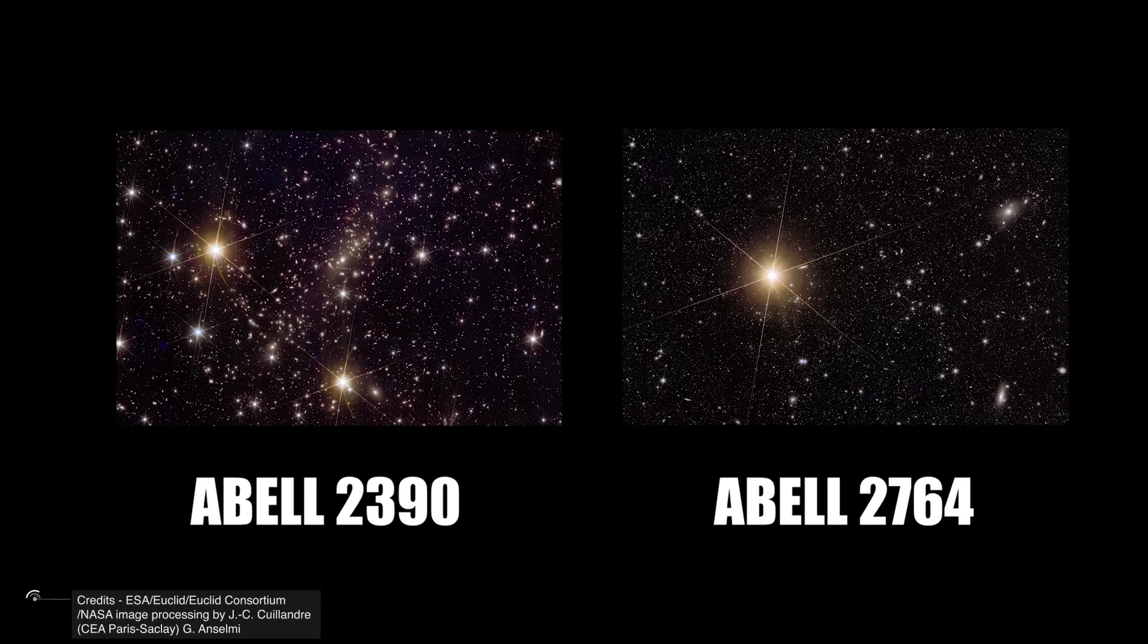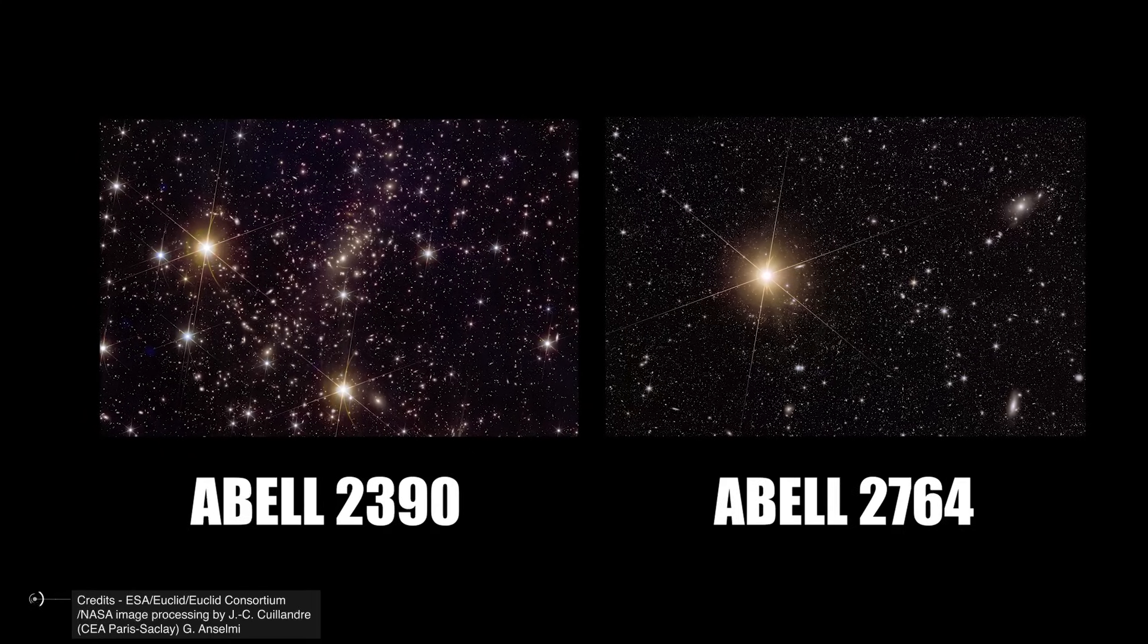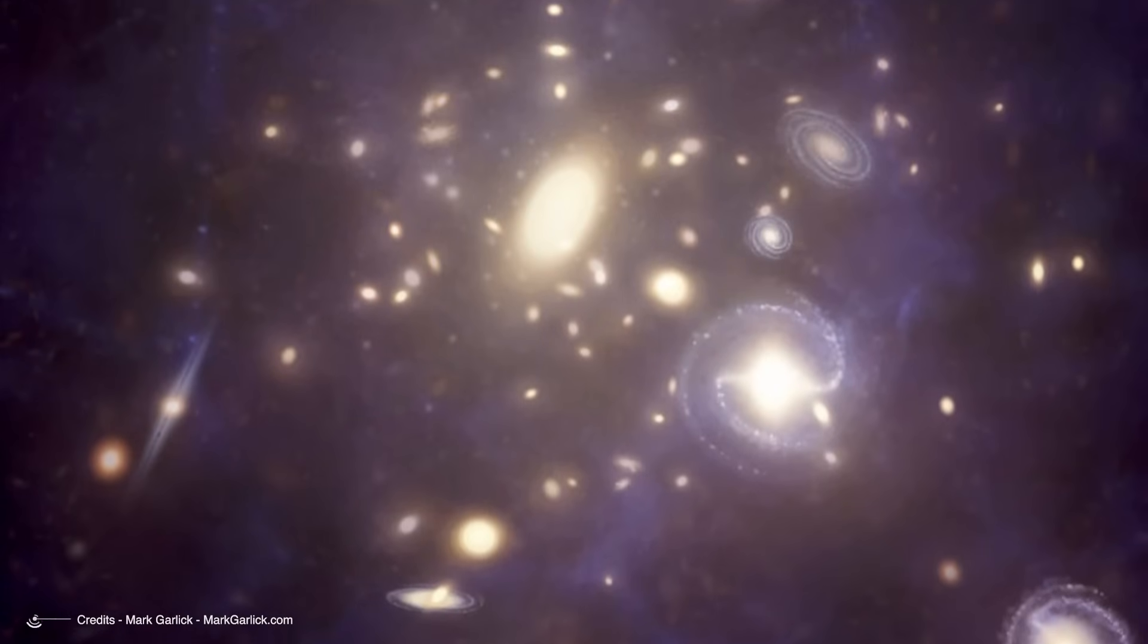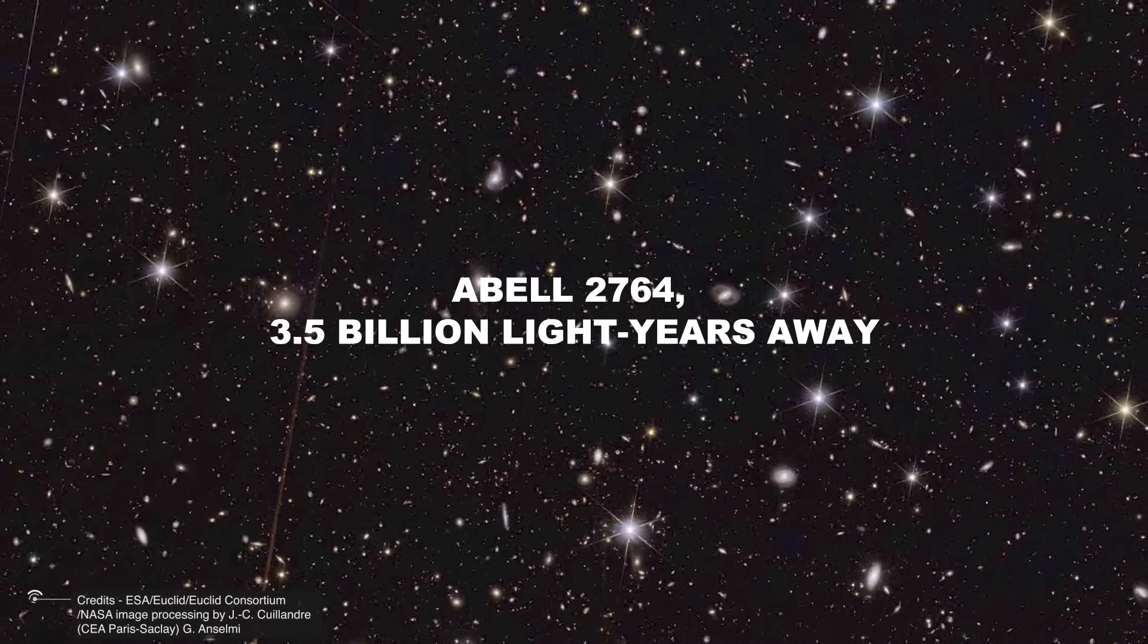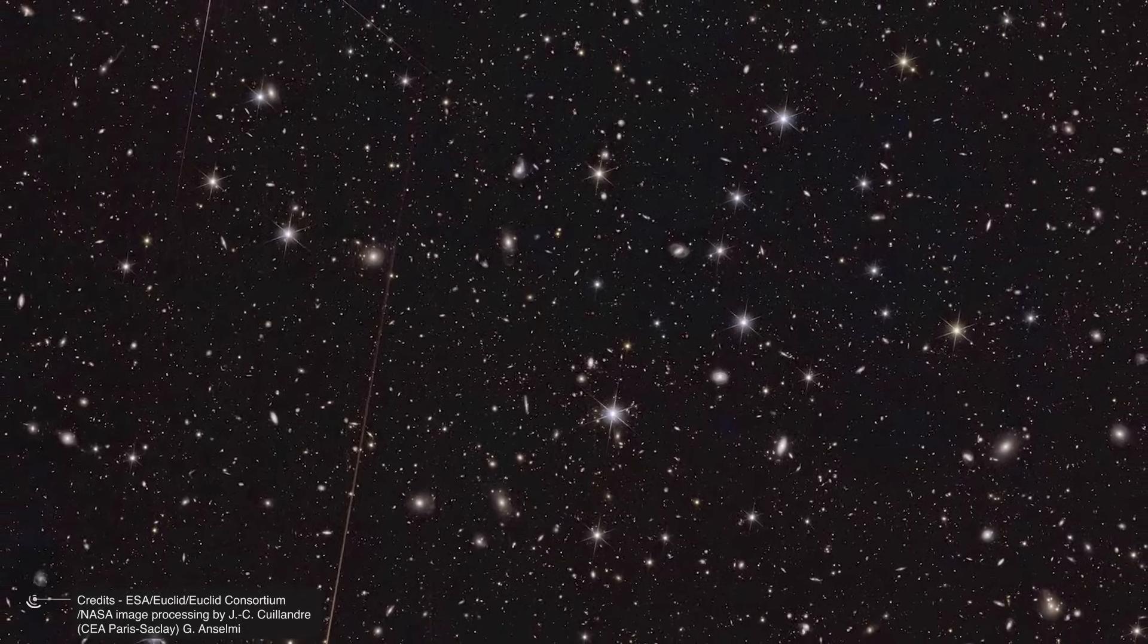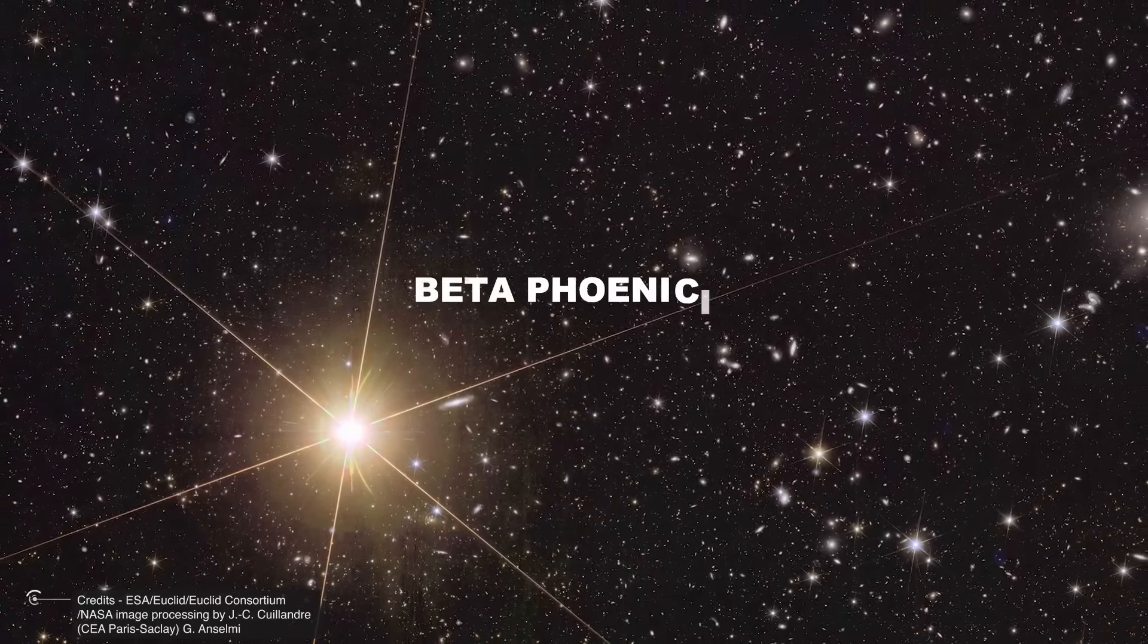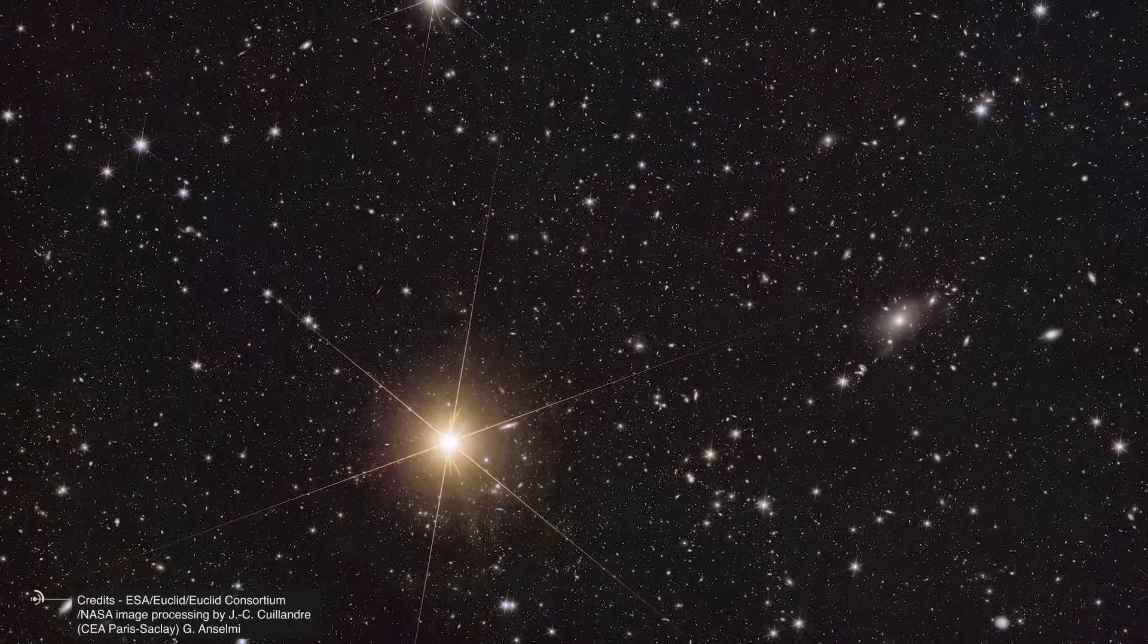Two of the images released last May 23rd depict the large galaxy clusters Abell 2390 and Abell 2764, which are among the most massive structures in the universe. Clusters like these constitute large reservoirs of dark matter, making them ideal astrophysical laboratories for studying the properties of this so far elusive component of the universe's mass. In particular, Abell 2764, located 3.5 billion light years away, is a very dense cluster containing hundreds of galaxies immersed in a halo of dark matter. Euclid has captured a wide range of objects in this corner of the sky, such as small background galaxies with very faint light and a very bright star near the cluster. This demonstrates how the telescope can bring together objects of very different brightness in a single view, without being blinded by the brightest sources.